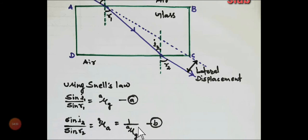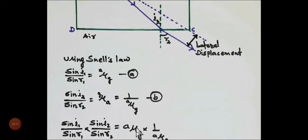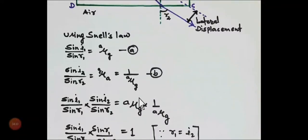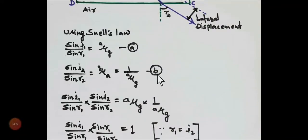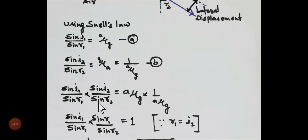According to the principle of reversibility of light, we can write this as one by mu g. Now multiply equation one and two.